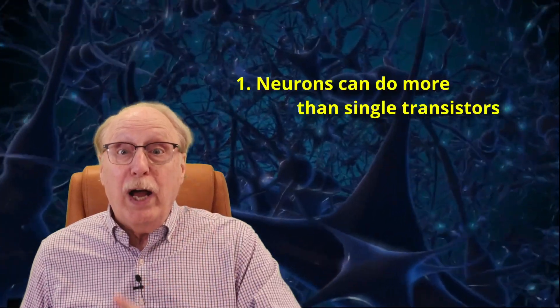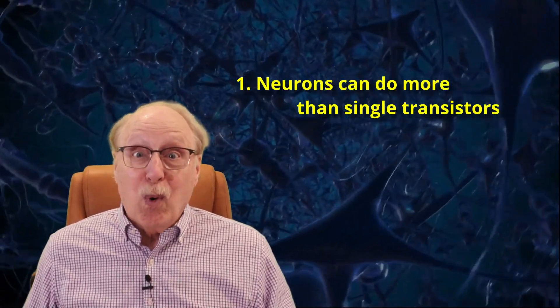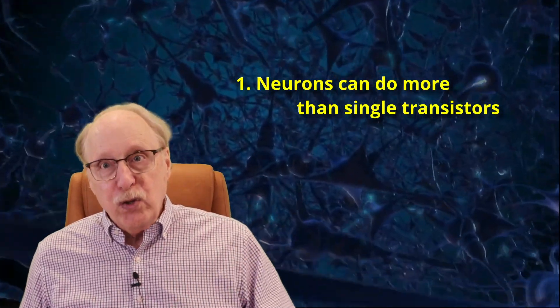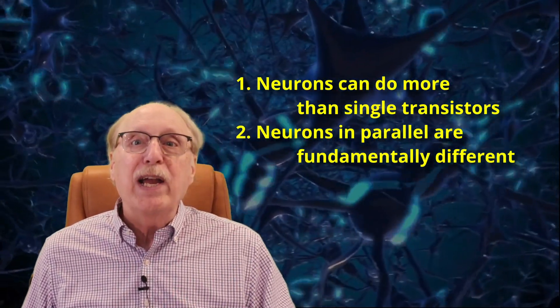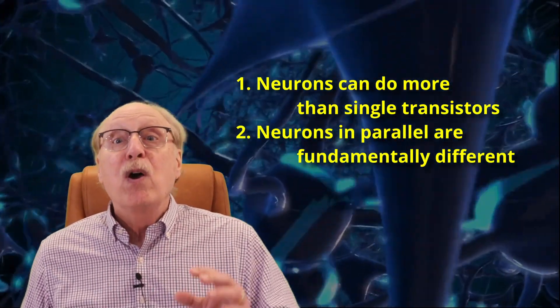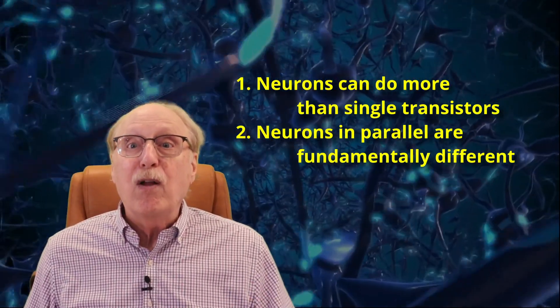With transistors running at speeds up to a billion times faster than neurons, we must conclude that one, a neuron can do more than a transistor, and two, there is some fundamental difference in the way our brains handle information with that massively parallel architecture.